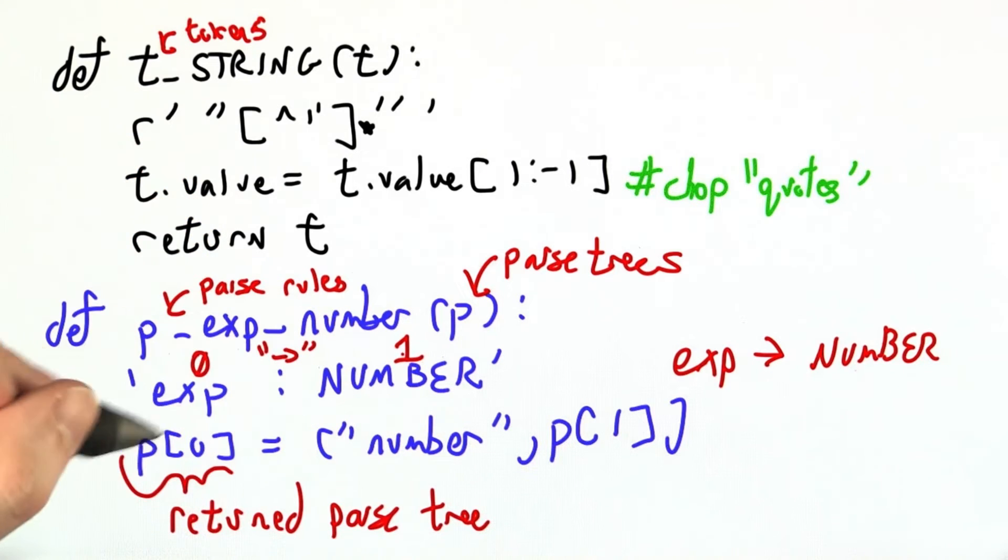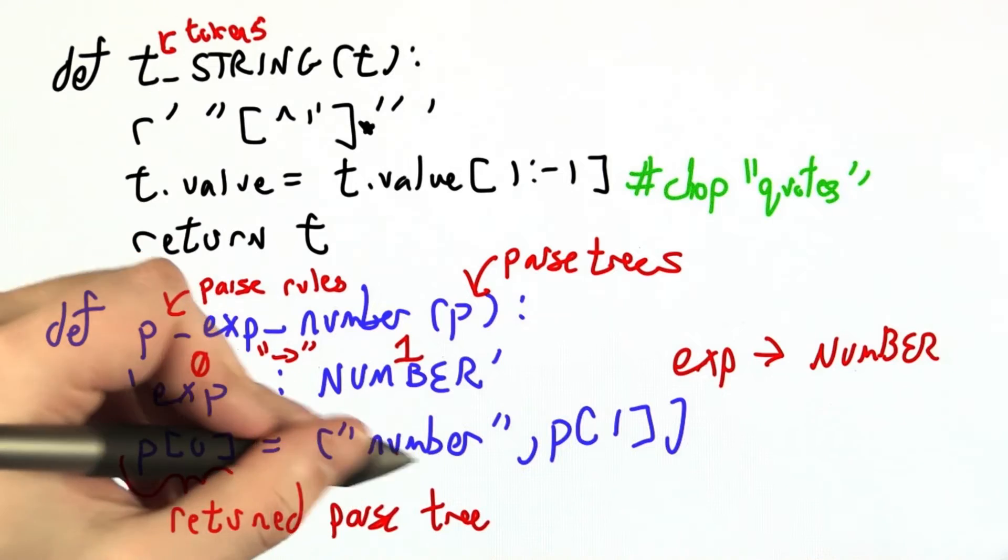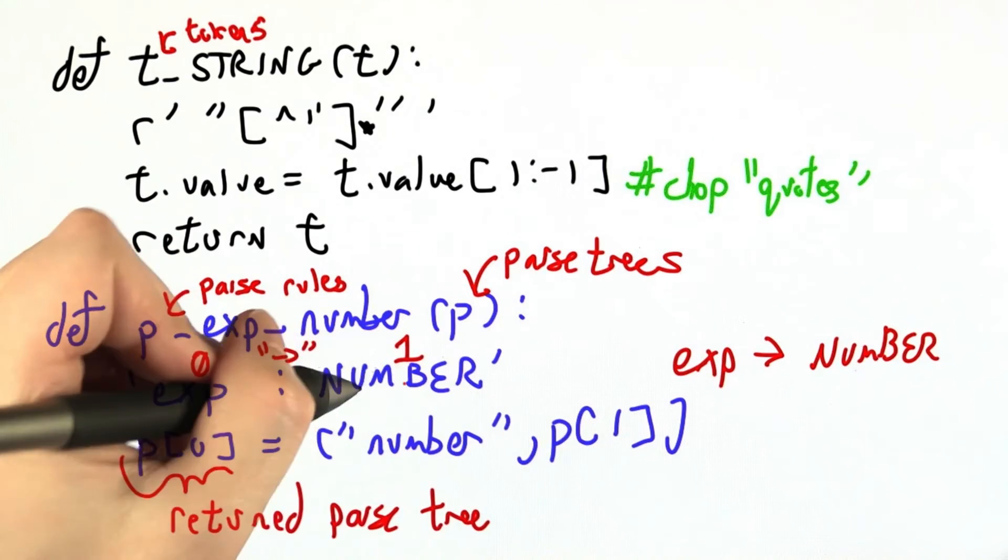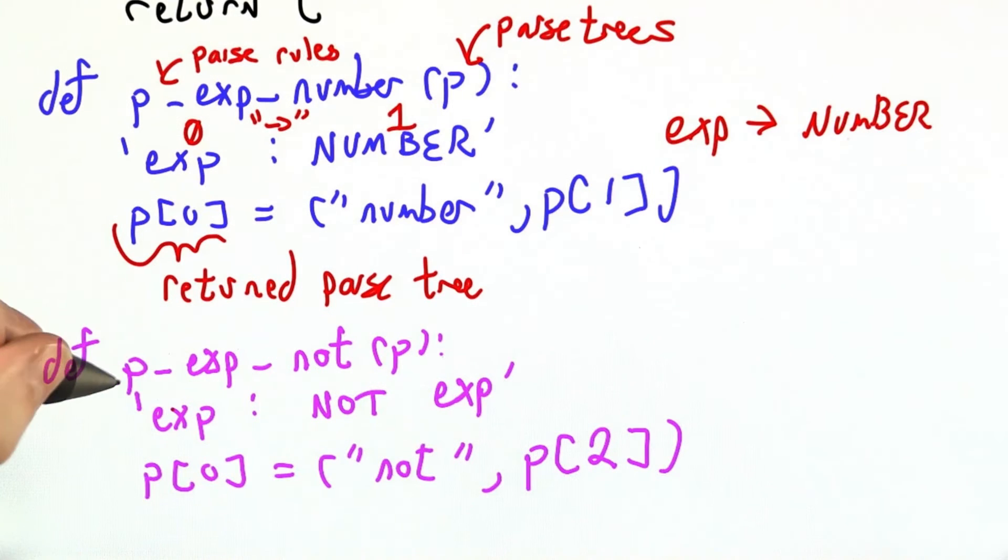So the parse tree I want associated with this expression when we're all done is a tuple that I make by combining the word number with the value of this actual token. Let me show you another one of these, and then it'll be a little clearer. So here once again I start with a P underscore. We're going to do that for all of our parsing rules.